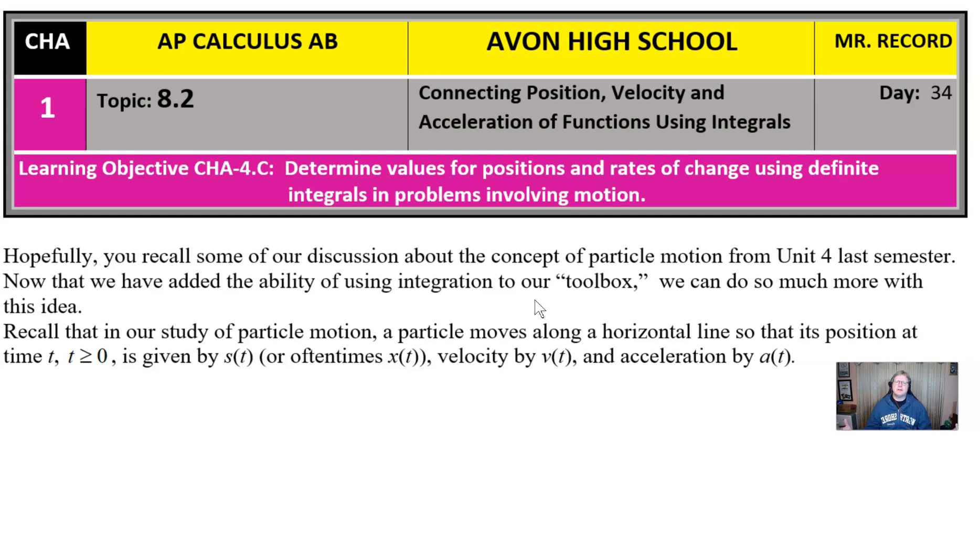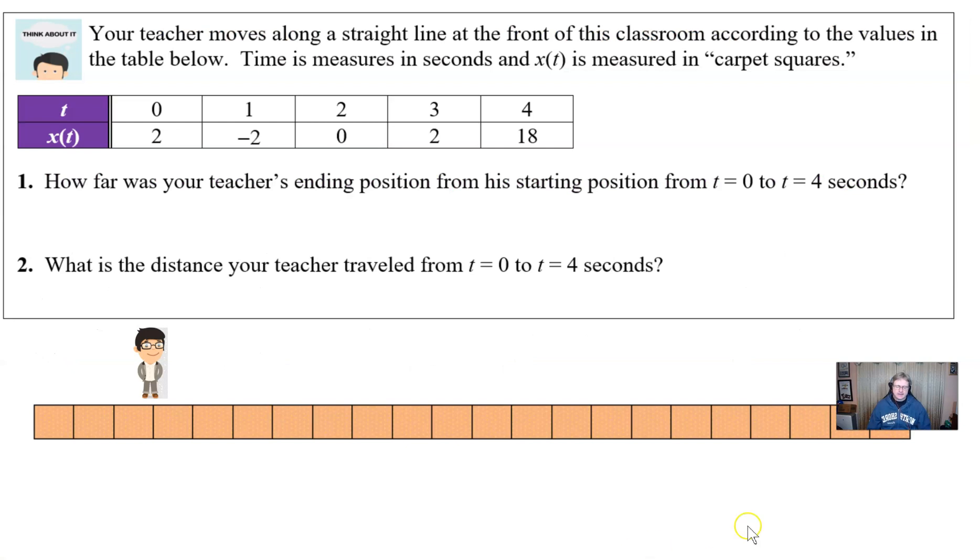It's likely that you certainly talked about this in the first semester of your course. And one of the things that I want you to remember is that in our study of particle motion, a particle moves along a horizontal line, typically on the AP exam. Sometimes we can have things move on a vertical line that will not be affected by gravity, though. And we would call the position sometimes S of T, maybe sometimes X of T if we choose to do so. But the velocity is typically V of T and the acceleration is A of T. Won't talk too much about velocity or acceleration in this activity, but let's see if this makes sense.